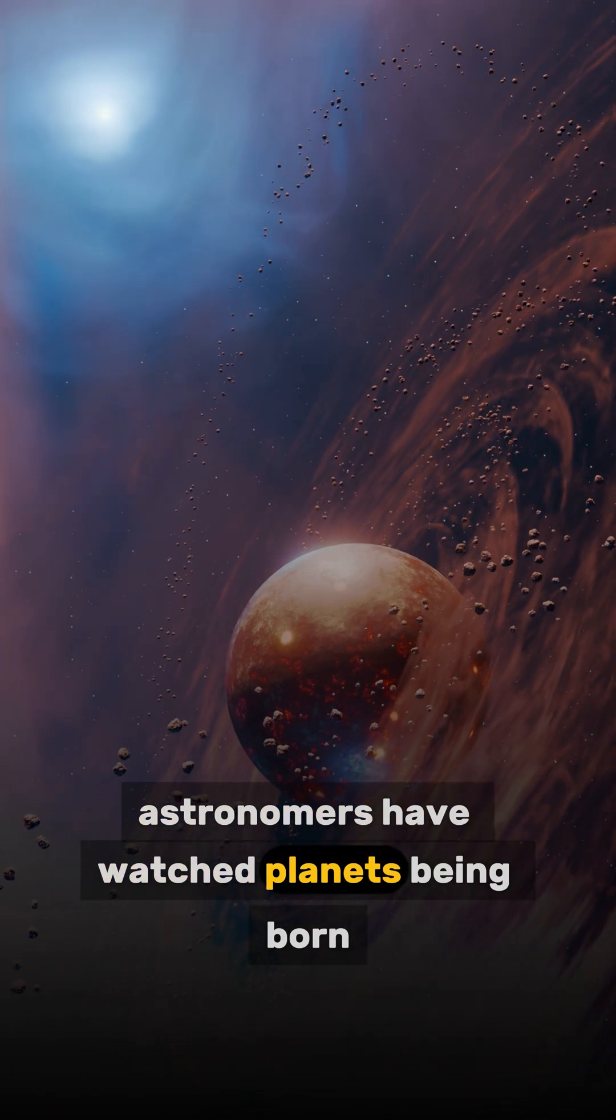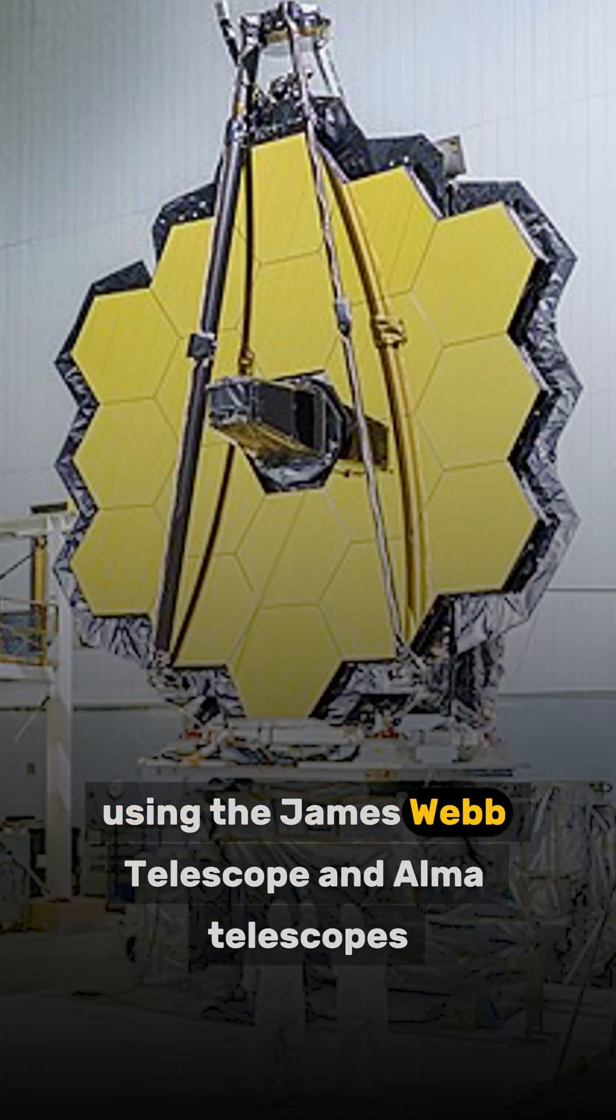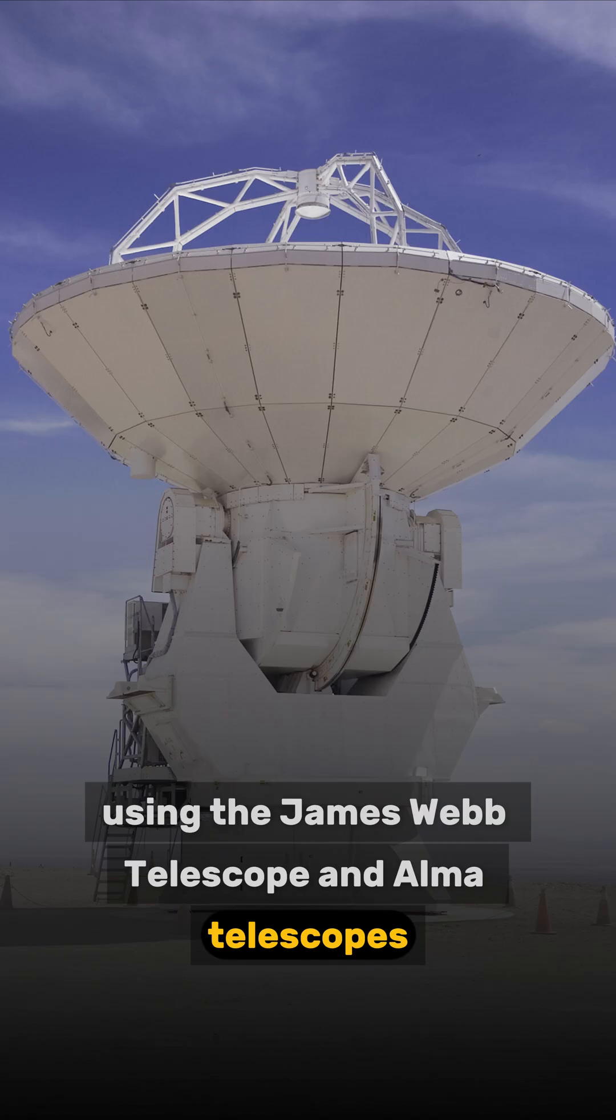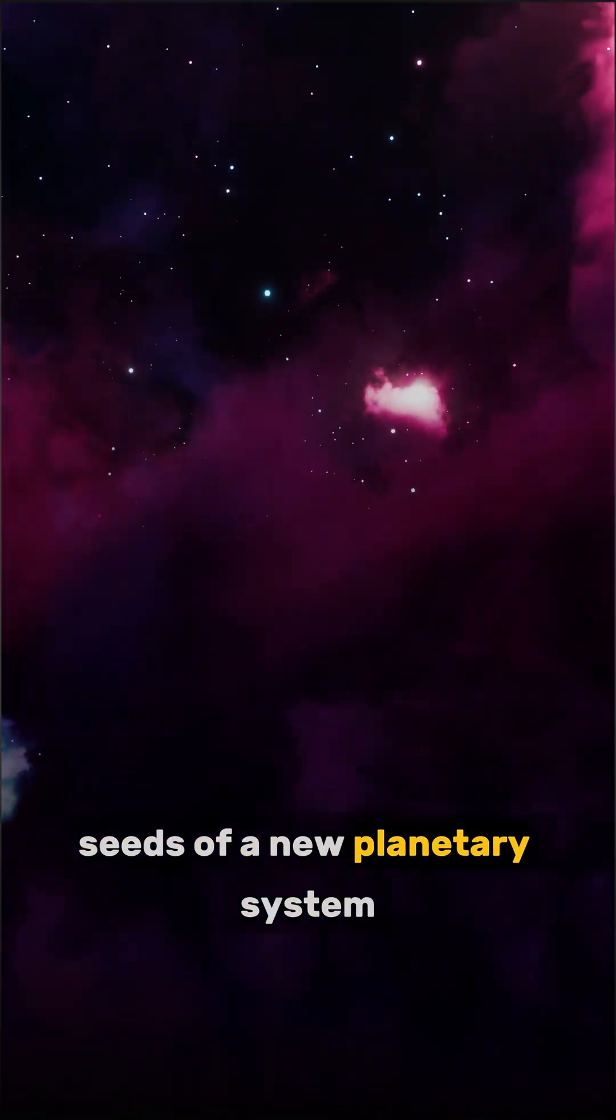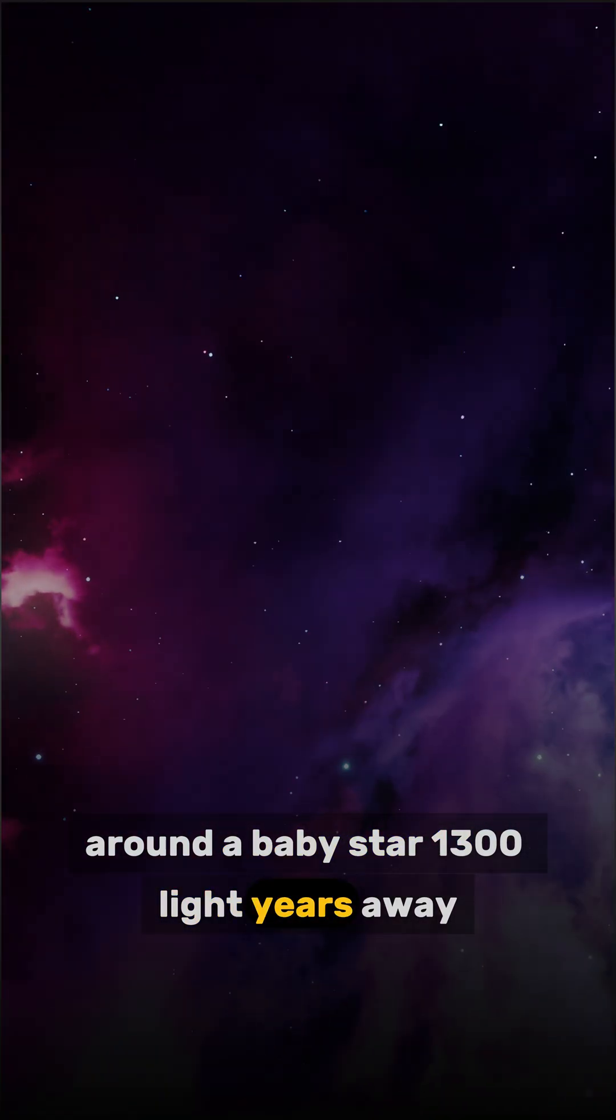For the first time ever, astronomers have watched planets being born. Using the James Webb Telescope and ALMA telescopes, they observed hot gas solidifying into the very first mineral seeds of a new planetary system around a baby star 1,300 light-years away.